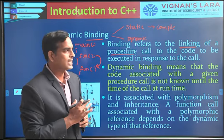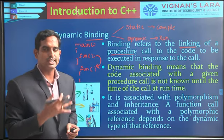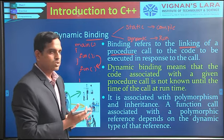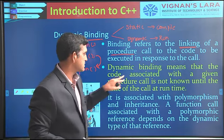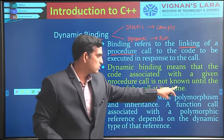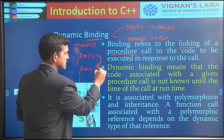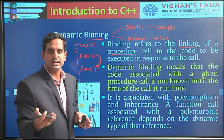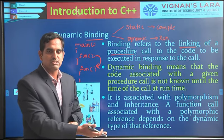Dynamic binding is usually done at runtime or execution time. In C++, dynamic binding occurs during execution. This means the code associated with a given procedure call is not known until the time of the call at runtime. The connection between function call and function code is not established during the compilation phase — only during the execution phase.